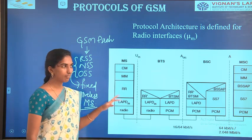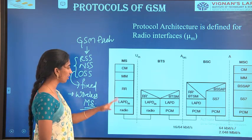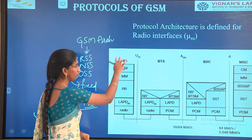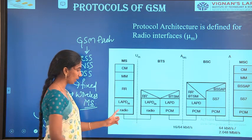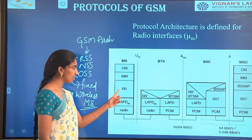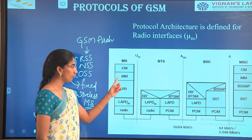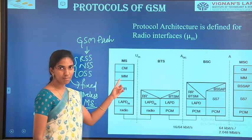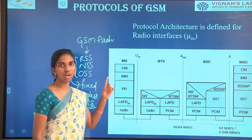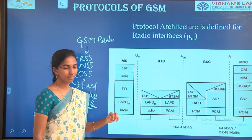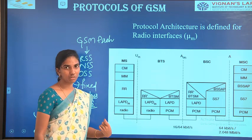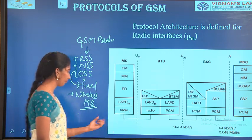In this topic we are going to concentrate on five things: one is Radio, second is LAPDM, third is RR, fourth is MM, and fifth is CM. First, let us discuss the Radio layer.